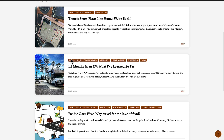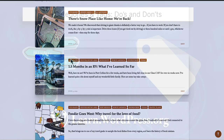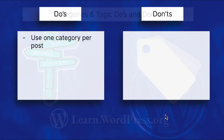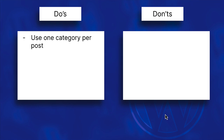Before you begin writing your blog, here are some quick do's and don'ts for categories and tags. First, primarily use one category per post. Limit the number of categories used with each post, and make sure each post is assigned to only one category whenever possible. This prevents content from being spread across multiple categories and reduces the chances of search engine confusion.